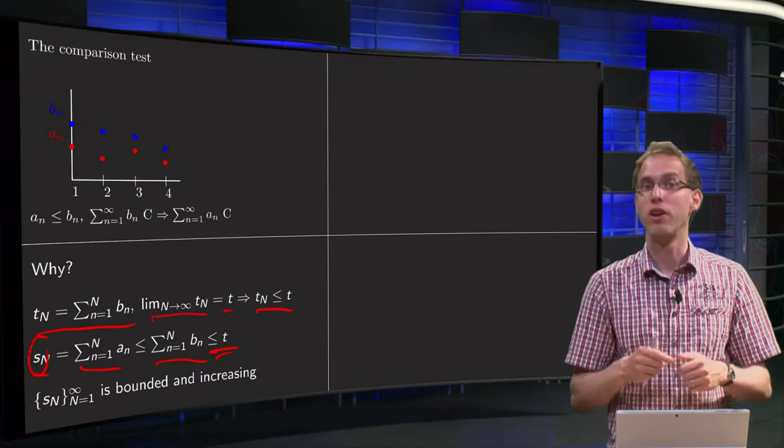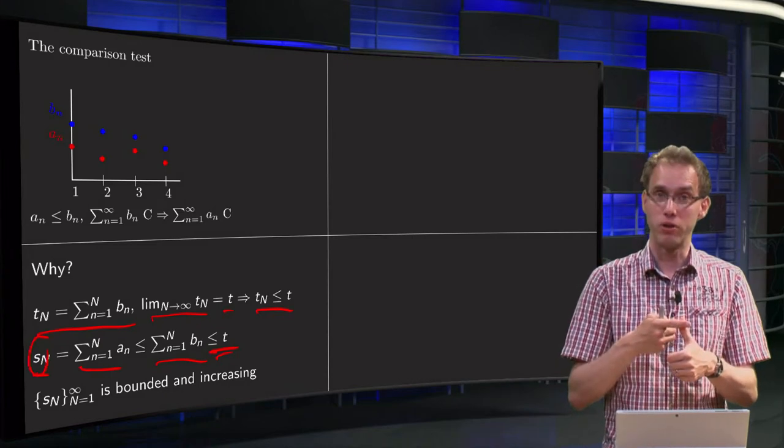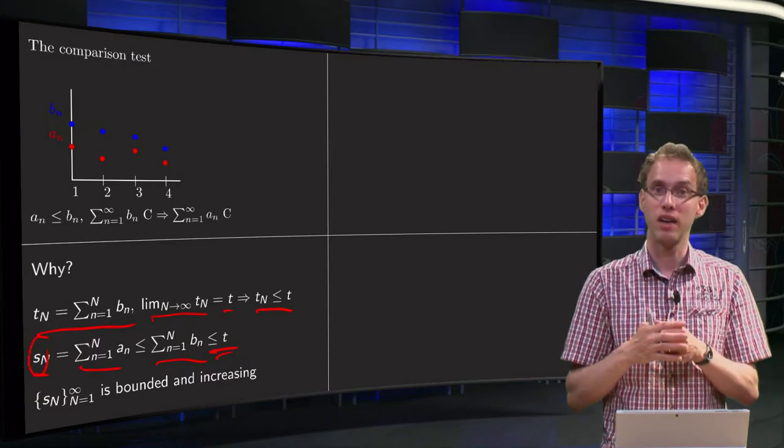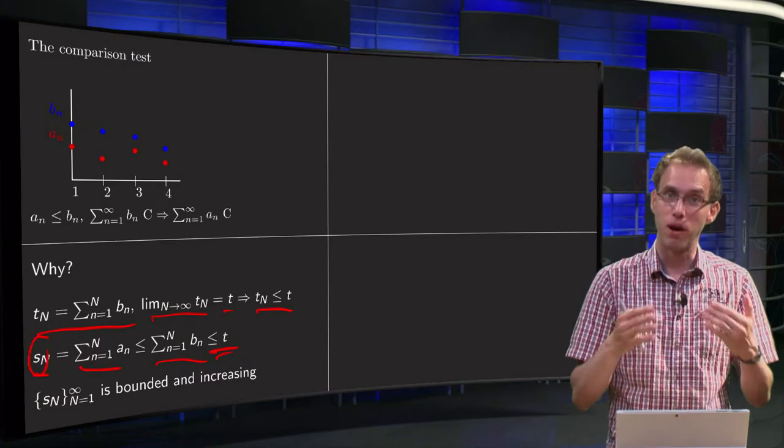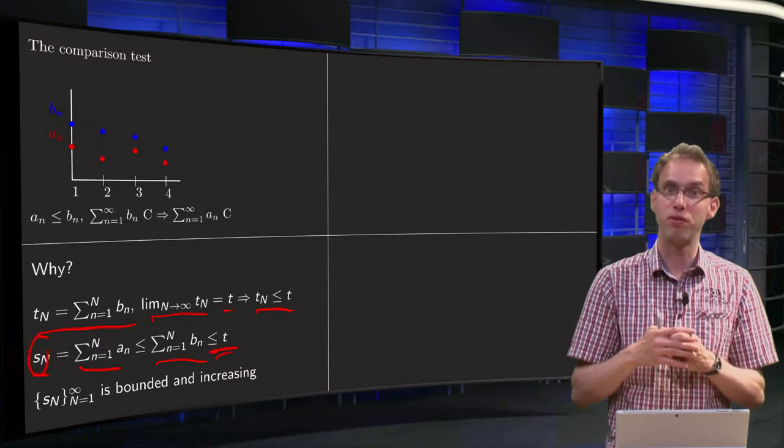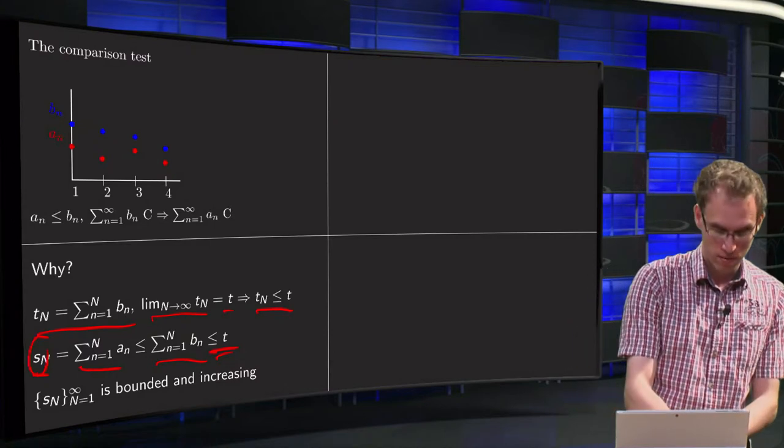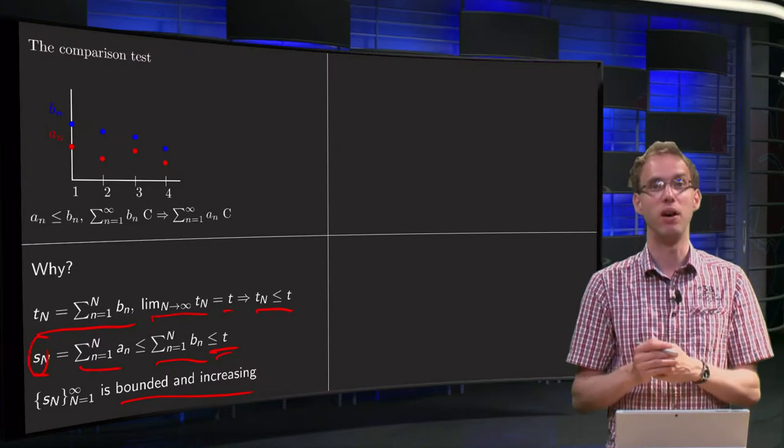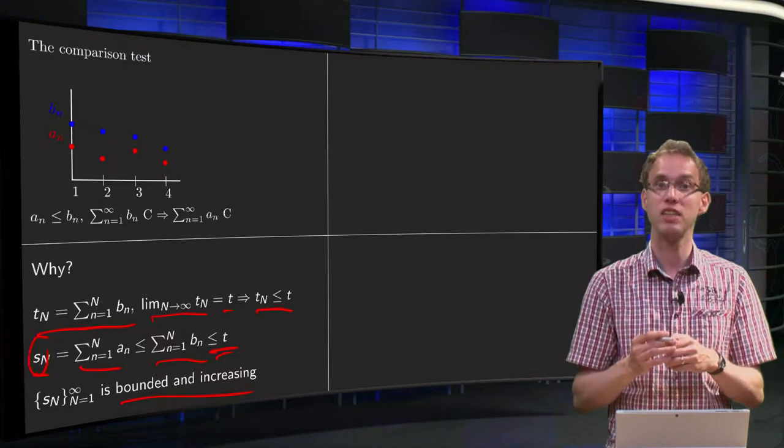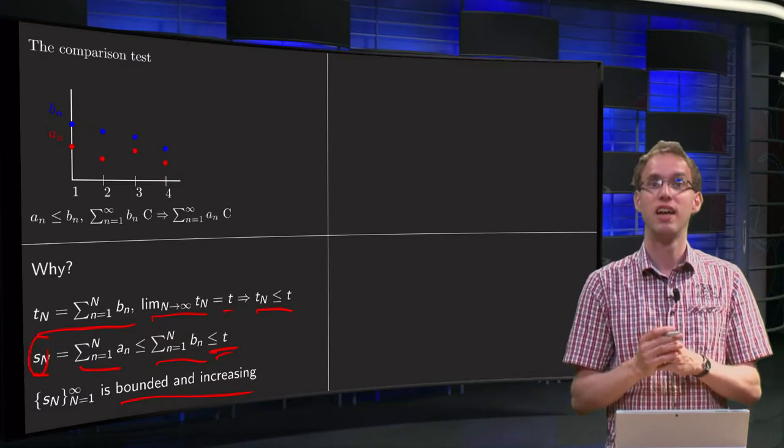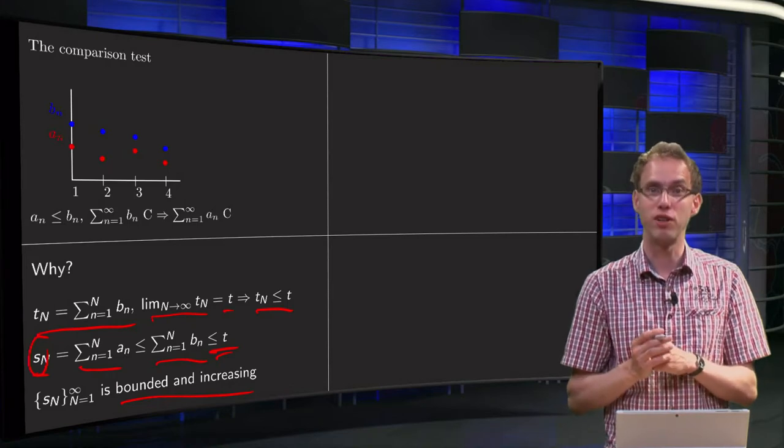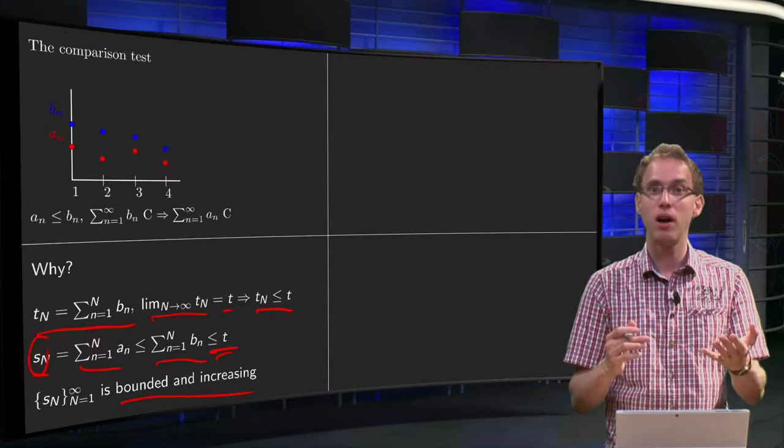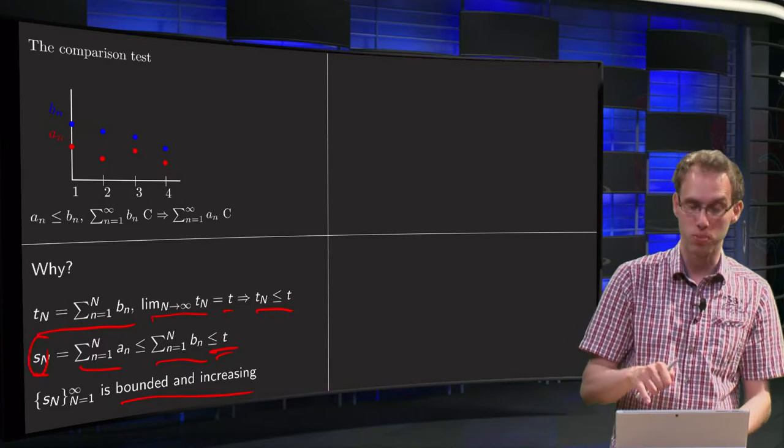But then we are done. We have an increasing sequence, a monotonic sequence which is bounded, and we know that all monotonic sequences which are bounded are in fact convergent. So we have a bounded and increasing sequence, hence convergent. So that is why we know that the sequence of the S capital N is convergent, which means that the series, sum n from 1 to infinity of An, is convergent. We don't know its sum, we only know that it is convergent and that its sum is below the sum T of course.